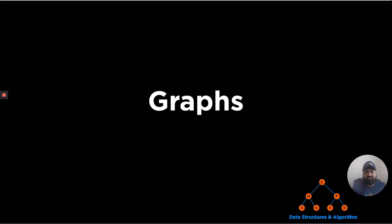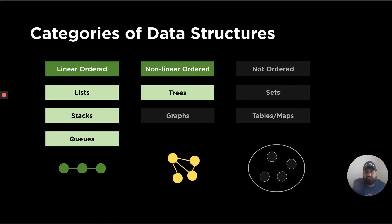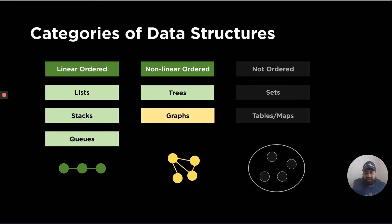Hi, everyone. Welcome to a new module on graphs. So far in this course, we have covered various linear ordered data structures that include lists, stacks, and queues. We then started with nonlinear ordered data structures that include trees and its different types. We covered both balanced and unbalanced trees, and then we proceeded with a special type of trees called heaps. In this lecture, we are going to start with a new type of nonlinear ordered data structure, which is graphs.